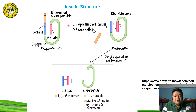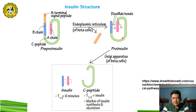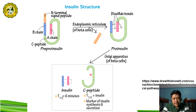The formation from preproinsulin to proinsulin happens in the ER, particularly the lumen of the ER of the beta cells of the pancreas. The C peptide is cleaved from proinsulin in the Golgi apparatus to form the mature insulin. A specific enzyme cleaves off the C peptide, which is the green portion located between the A and B chains, in order to form the mature form of insulin.